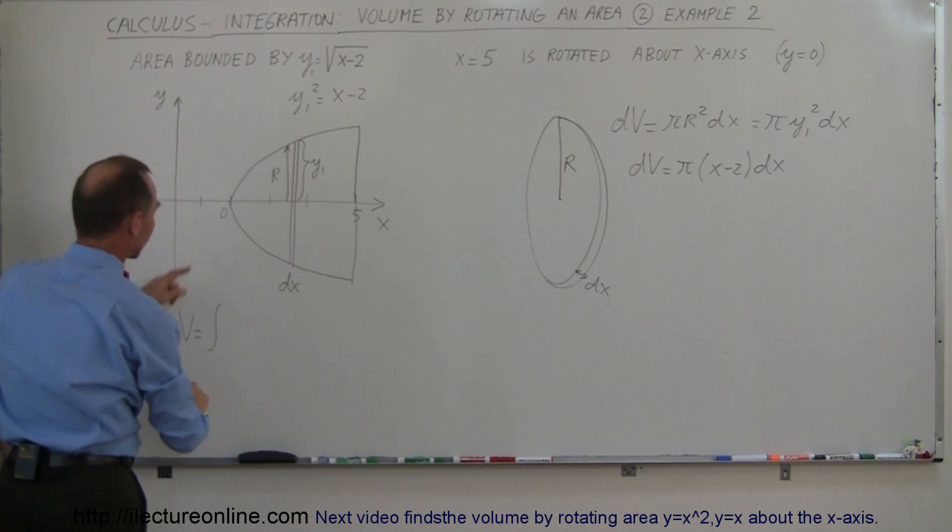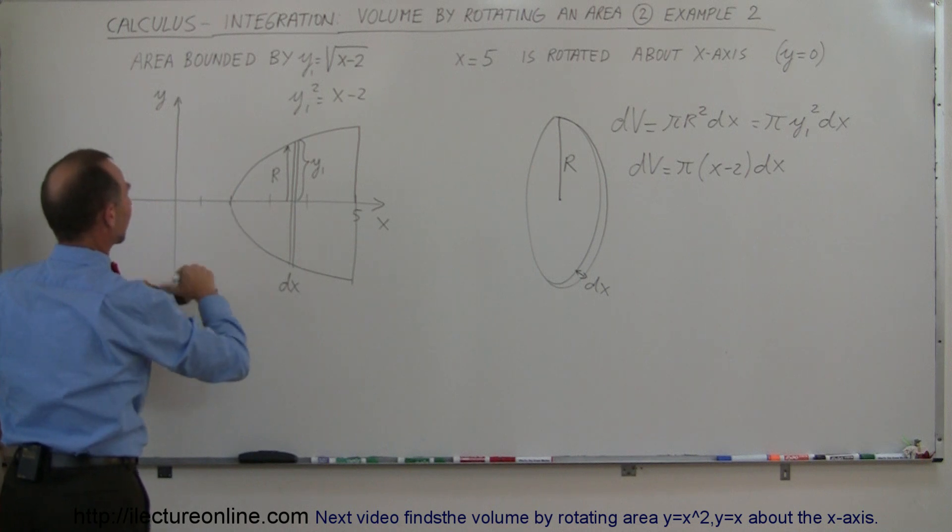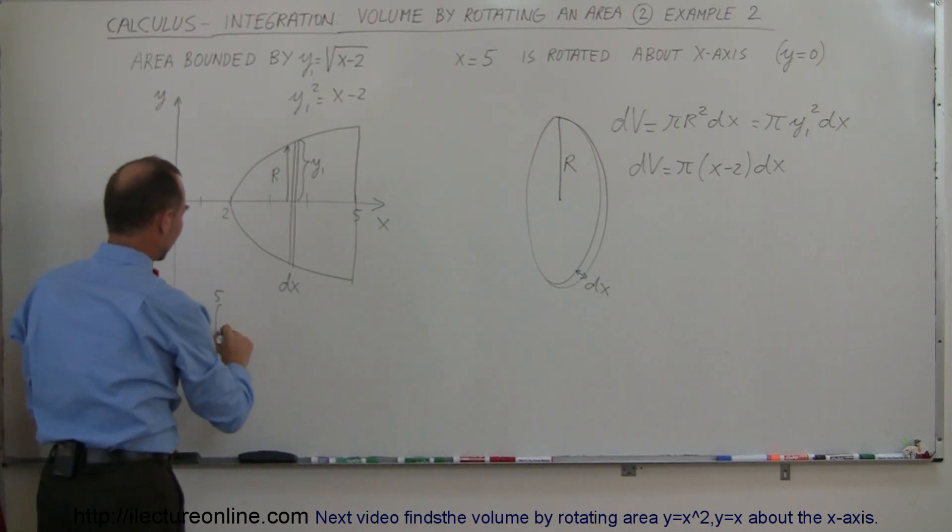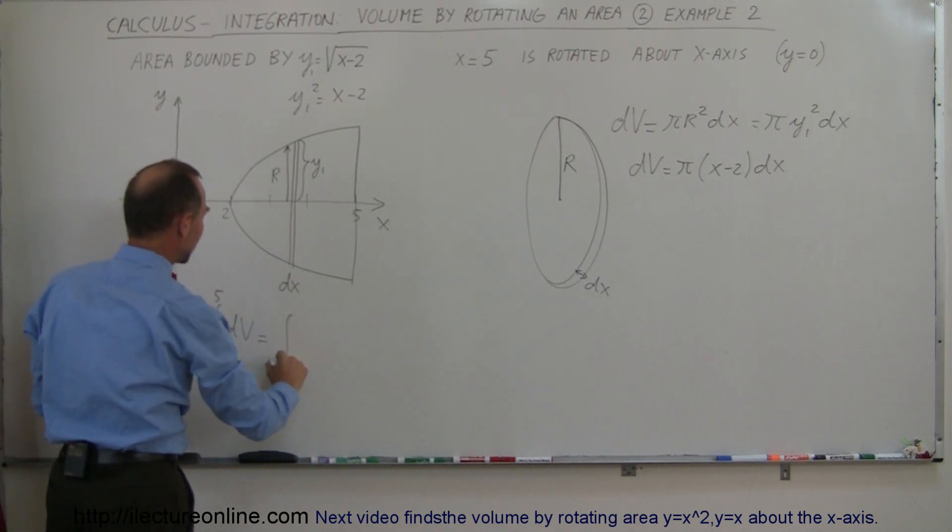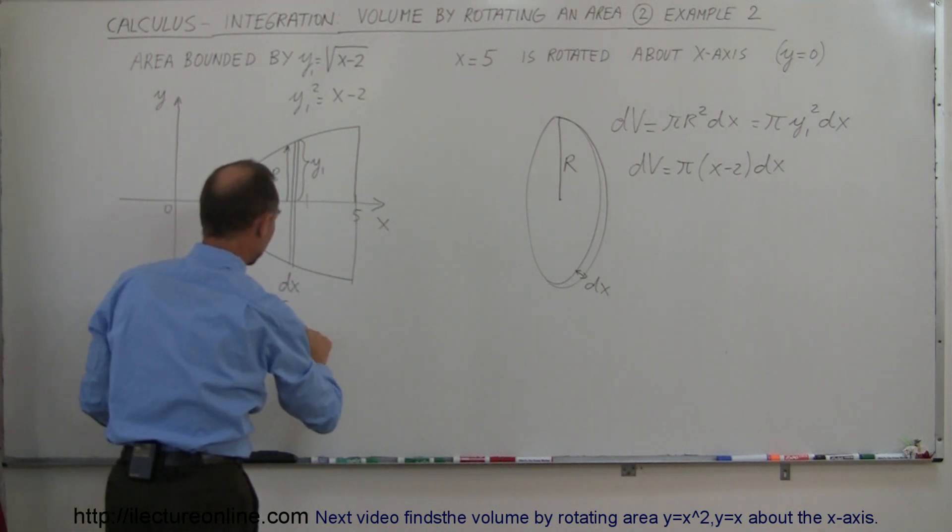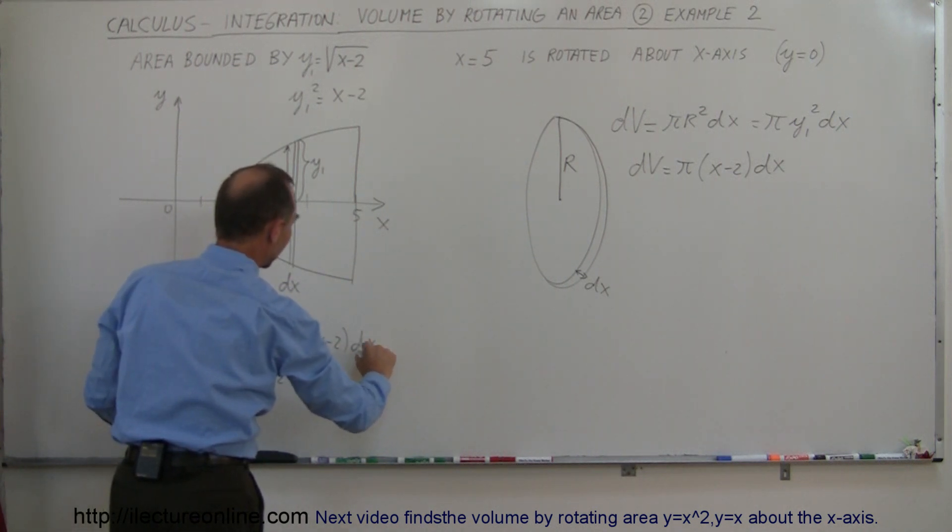So my volume is going to be equal to the integral from, not from 0 because I started—I said 0, actually I meant 2. 0 is over here, this is 2. So from 2 to 5 of all my dv's, that would be the integral from 2 to 5.